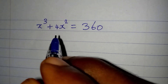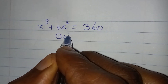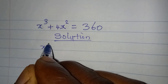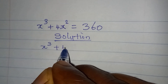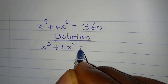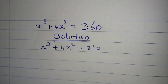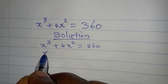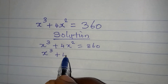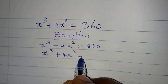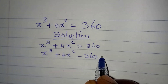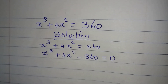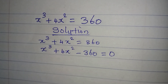Let's solve this problem. We have x to the power of 3 plus 4x squared equal to 360. Let's bring everything to the left: x to the power of 3 plus 4x squared minus 360 now equal to zero. Remember, we are bringing out only the real solution.